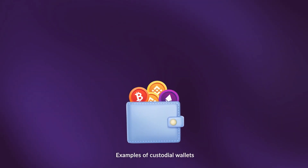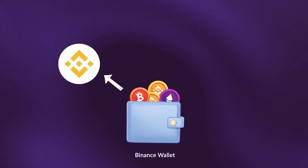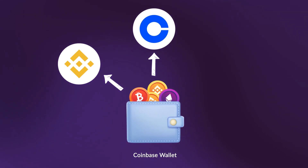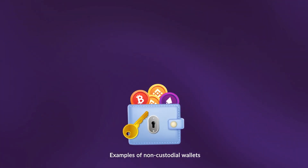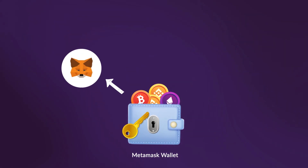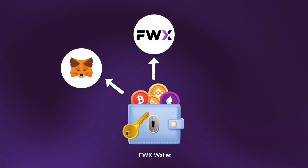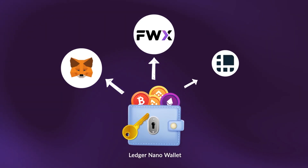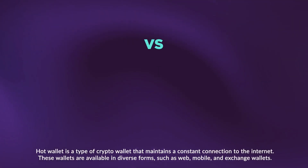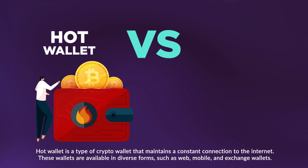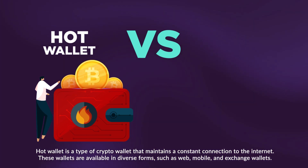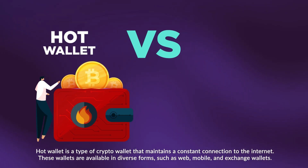Examples of custodial wallets include Binance Wallet, Coinbase Wallet, and BitMEX Wallet. Examples of non-custodial wallets include MetaMask Wallet, FWX Wallet, and Ledger Nano Wallet. Hot wallets are a type of crypto wallet that maintains a constant connection to the internet, available in diverse forms such as web, mobile, and exchange wallets.